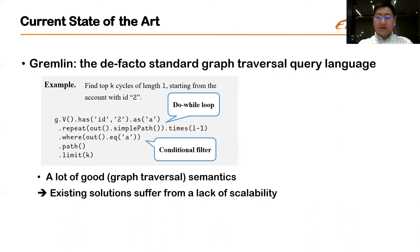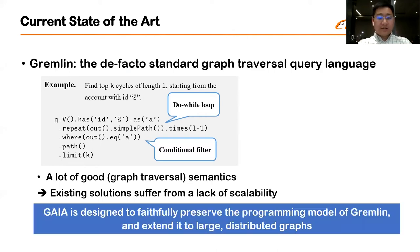But on the other hand, it introduces complex dependencies among fine-grained traversing steps, which is very hard to scale. And therefore, existing solutions suffer from the lack of scalability. So Gaia aims to provide a system that faithfully preserves the program model of Gremlin while extending it to large distributed graphs.